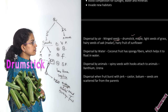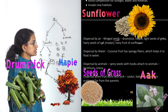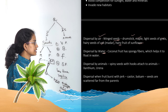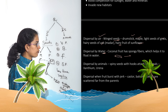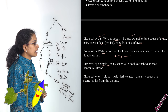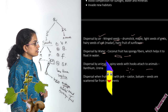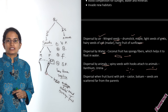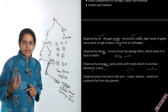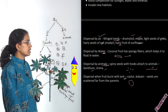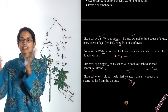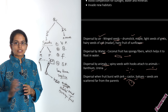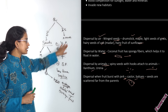Seeds dispersed by air are usually winged or hairy — common examples are drumstick, maple, grasses, and sunflower. Seeds dispersed by water have spongy fibers — coconut is a classic example, floating and moving from place to place. Seeds dispersed by animals are spiny and stick to the animal's body, dropping off when the animal moves; common examples are Xanthium and Urena. The last method is dispersal by bursting — a sudden jerk causes seeds to scatter; common examples are castor and balsam.